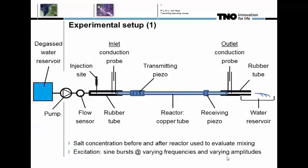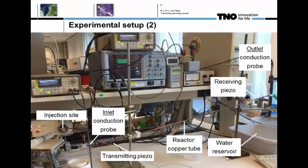For the remainder of the talk, I use the following setup. We have the reactor — the copper tube — with a transmitting piezo on one end and a receiving piezo on the other end just for diagnostics. We evaluate the mixing efficiency by injecting a salt pulse and measuring the conductivity of the salt at the inlet and at the outlet. We use a pump to pump degassed water past the flow sensor and through the tube to a water reservoir. The excitation consists of sine bursts at varying frequencies and varying amplitudes.